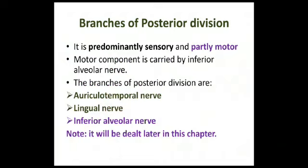Branches of the posterior division are predominantly sensory and partly motor. The motor component is carried by the inferior alveolar nerve. The main branches of the posterior division are the auriculotemporal nerve, lingual nerve, and inferior alveolar nerve. All these branches will be dealt with separately in this chapter.